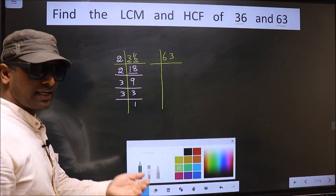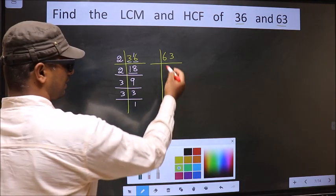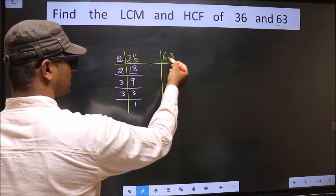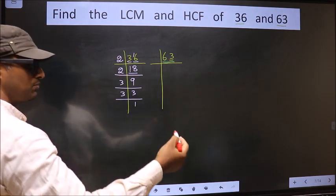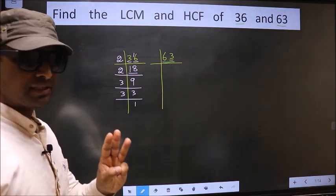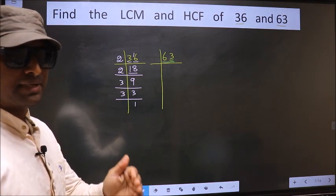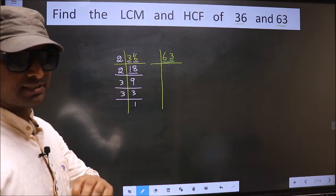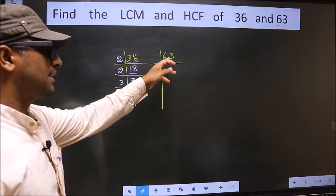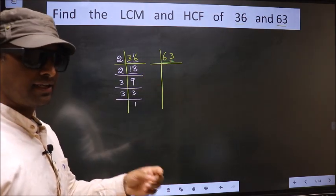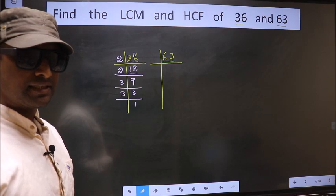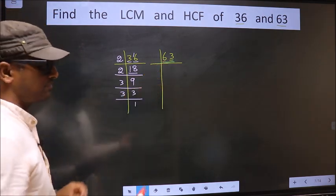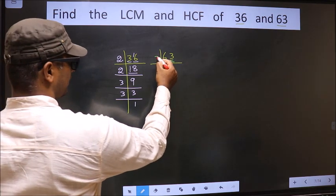Now the other number is 63. The last digit is 3, so this number is not divisible by 2. Next, prime number 3. To check divisibility by 3, we should add the digits. That is 6 plus 3 equals 9. Is 9 divisible by 3? Yes. So this number is also divisible by 3.